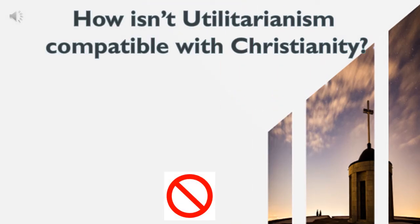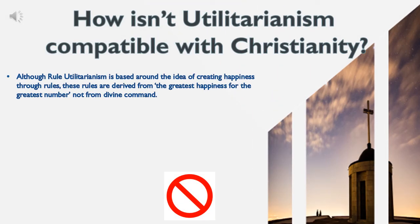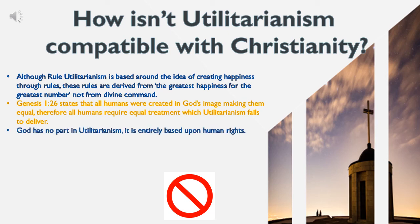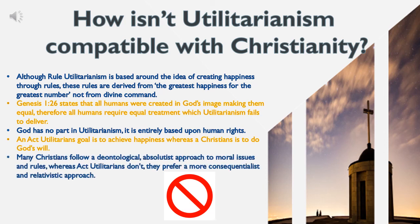How isn't Utilitarianism compatible with Christianity? Although rule utilitarianism is based around the idea of creating happiness through rules, these rules are derived from the greatest happiness for the greatest number, not from divine command. Genesis 1:26 states that all humans were created in God's image making them equal, therefore all humans require equal treatment — which utilitarianism fails to deliver. God has no part in utilitarianism; it is entirely based upon human reasoning. An act utilitarian's goal is to achieve happiness whereas a Christian's is to do God's will. Many Christians follow a deontological, absolutist approach to moral issues and rules, whereas act utilitarians prefer a more consequentialist and relativistic approach.